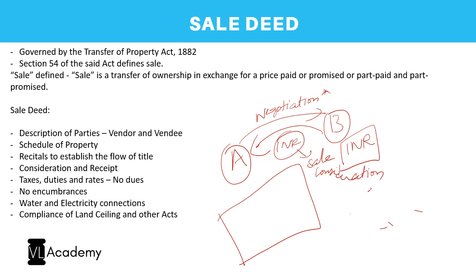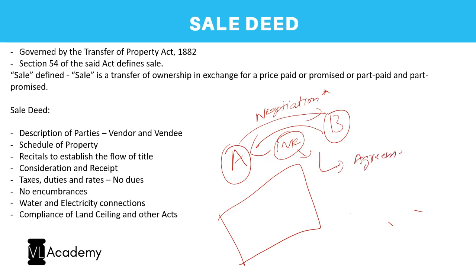Once the price is frozen, A won't immediately sell nor will B immediately buy. Generally, A and B will enter into an agreement of sale. One important clause in that agreement specifies the timeline—say, three months—within which they will register the sale deed. Within those three months B arranges the money and A prepares to transfer the property rights.